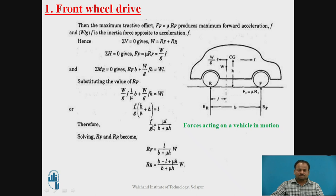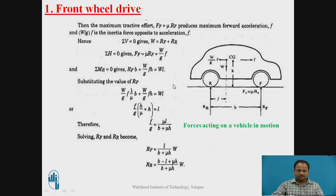Using the maximum acceleration formula, if we substitute it into the equation, we will get RF. And by putting RF into this particular equation, we will get RF. This is all about the maximum acceleration, tractive effort, and the reactions at the front wheels.